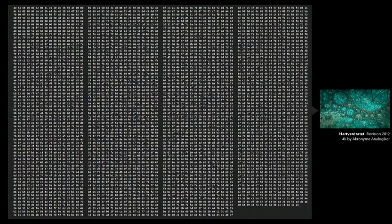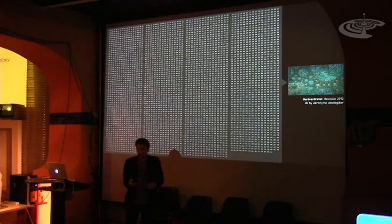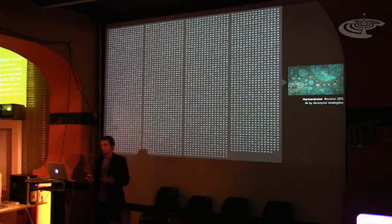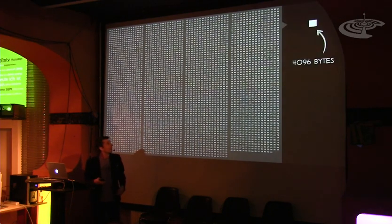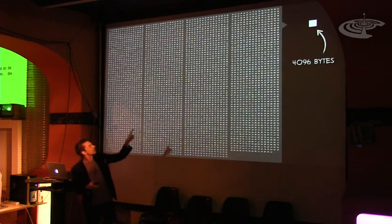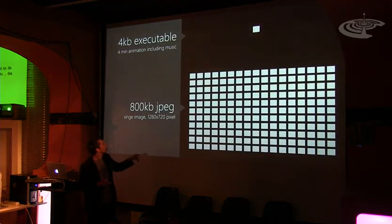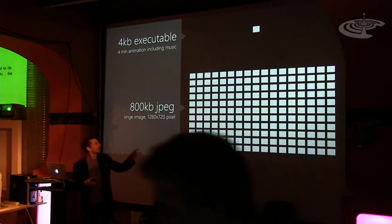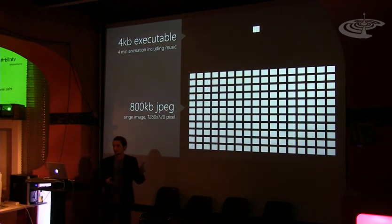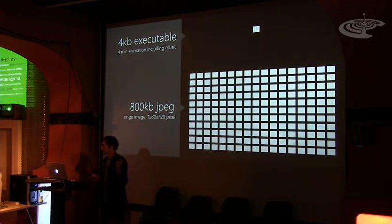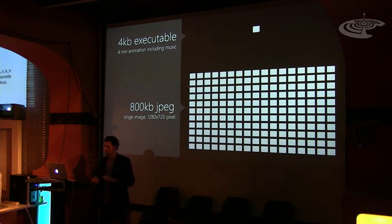Normally, you spend like 1.2K just on the music — and it's actually nice music — for a three-minute animation. And if you then imagine, okay, let's scale it down a little bit: the JPEG I showed is like 800 kilobytes, and the quality is worse because we have some compression artifacts. So the size limit of 4K is just completely crazy.